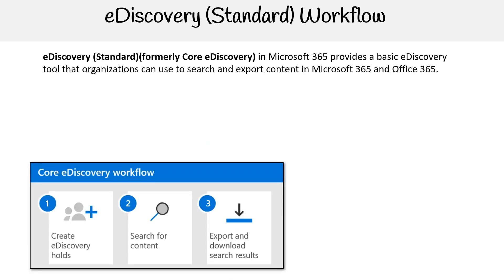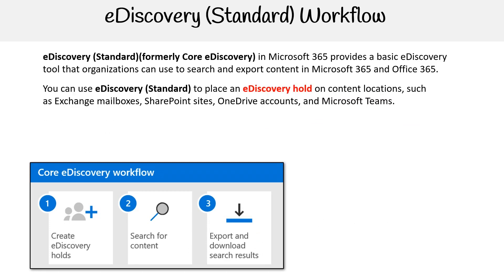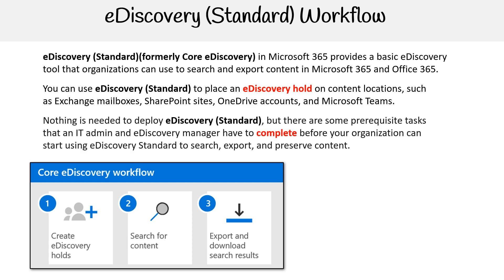eDiscovery Standard in Microsoft 365 provides a basic eDiscovery tool that organizations can use to search and export content in Microsoft 365 and Office 365. You can use eDiscovery Standard to place an eDiscovery hold on content locations, such as Exchange Mailboxes, SharePoint Sites, OneDrive accounts, and Microsoft Teams. Nothing is needed to deploy eDiscovery Standard, but there are some prerequisite tasks that an IT admin and eDiscovery Manager have to complete before your organization can start using eDiscovery Standard to search, export, and preserve content.